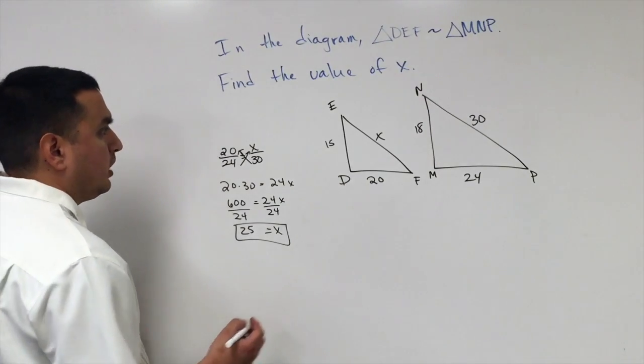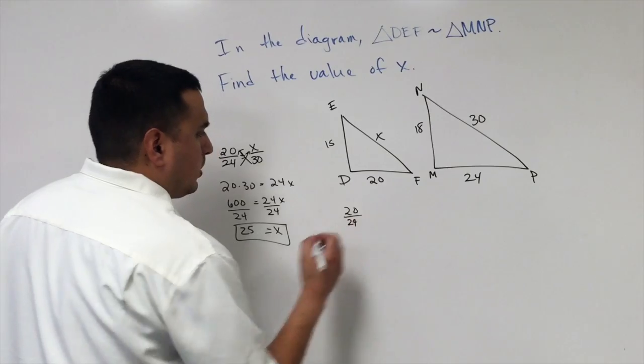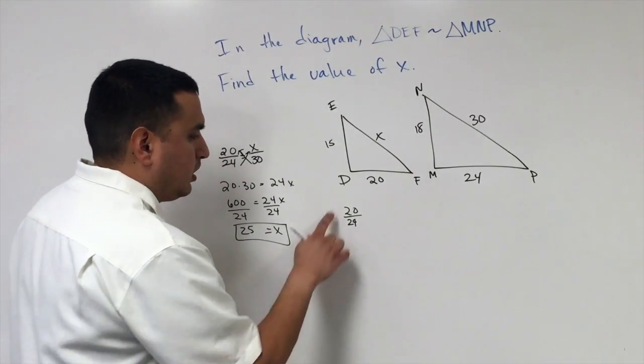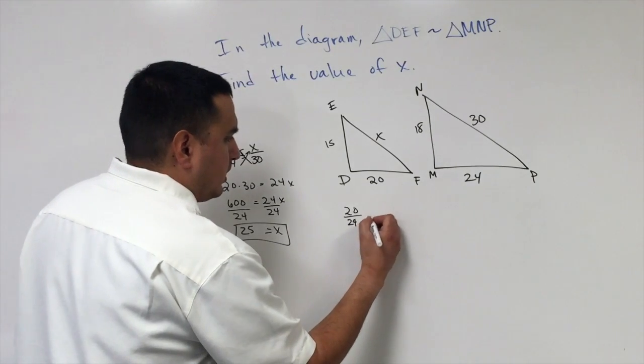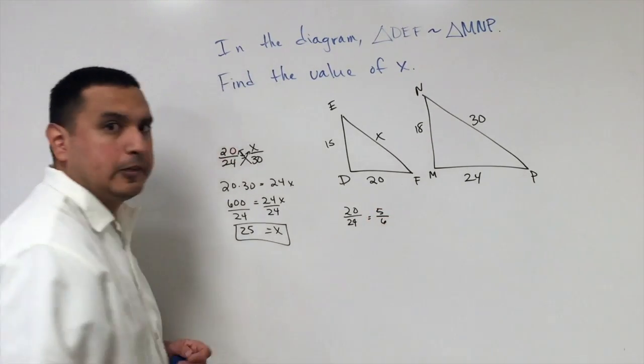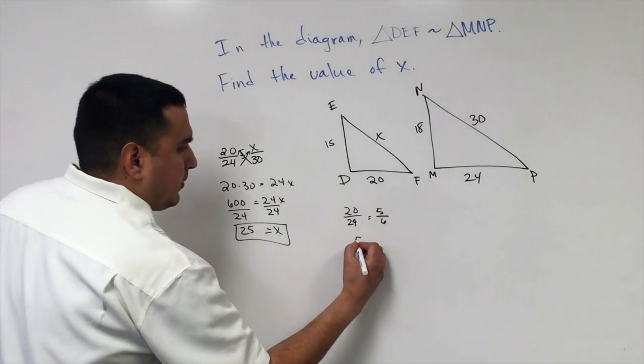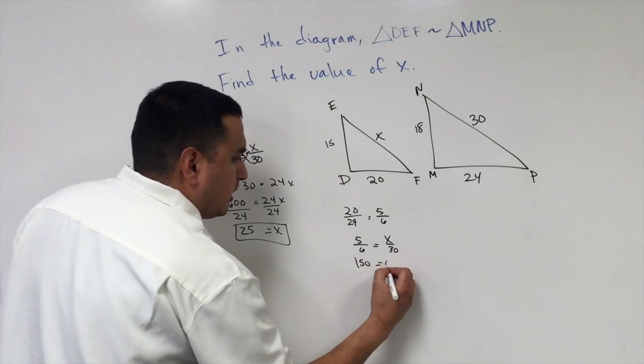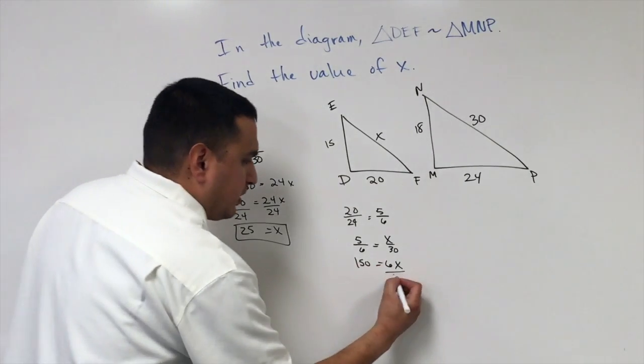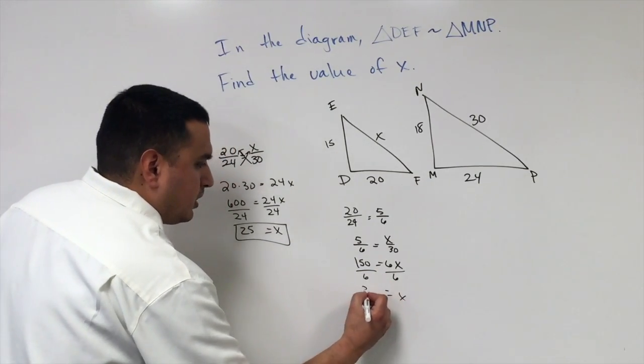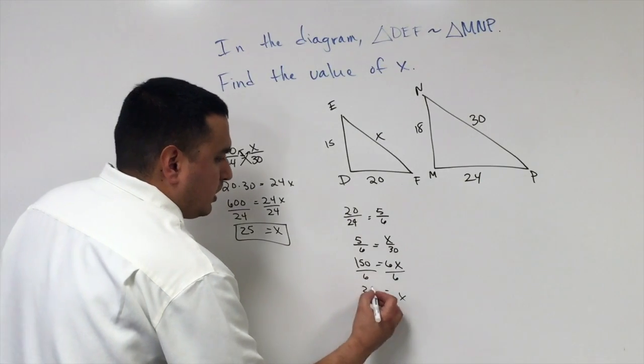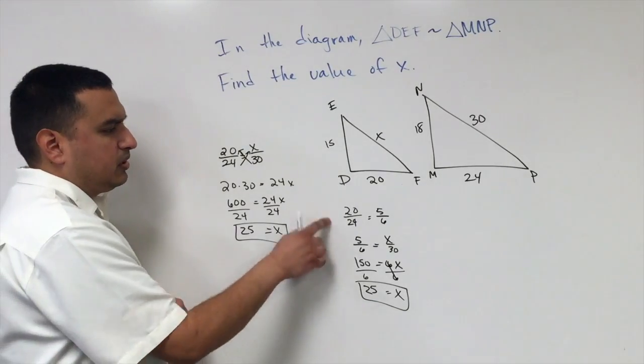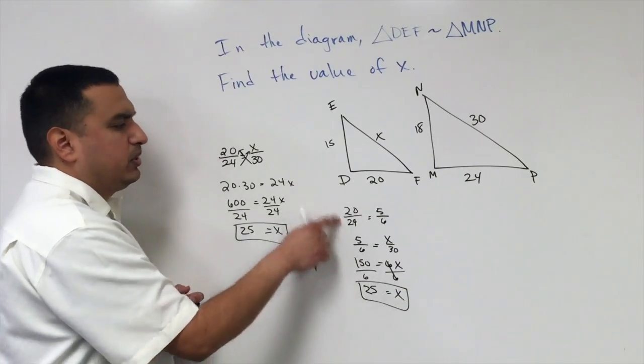Another strategy: at the beginning, if you reduce 20 and 24 to lowest terms, it makes the math easier. I can factor out 4 from each, giving 5 over 6. So 5 over 6 equals X over 30. 5 times 30 is 150 equals 6X. If you're not using a calculator, the math is easier. 150 divided by 6 is 25, same answer. The math will be easier if you reduce at the beginning.